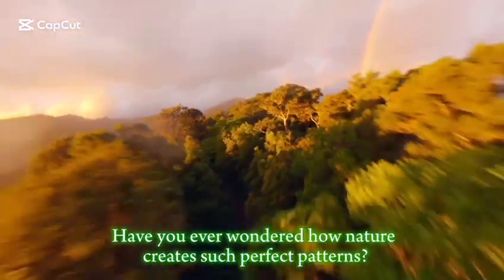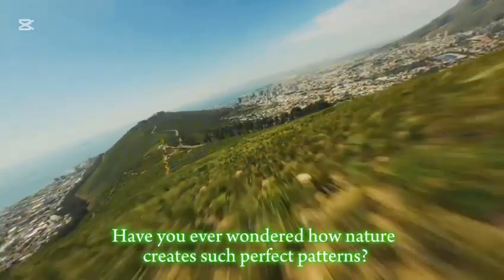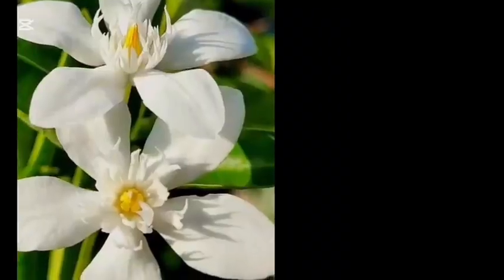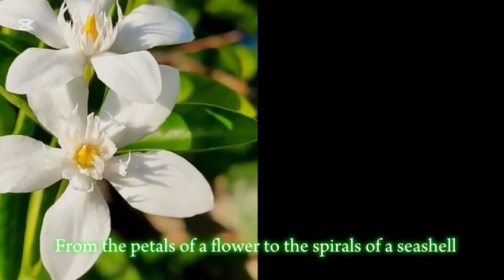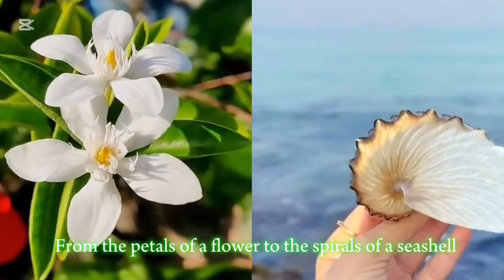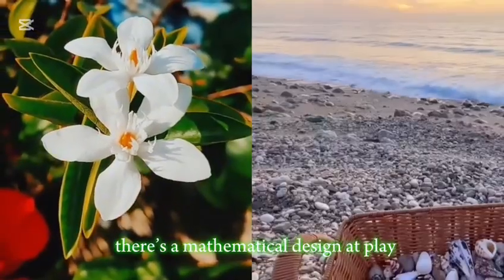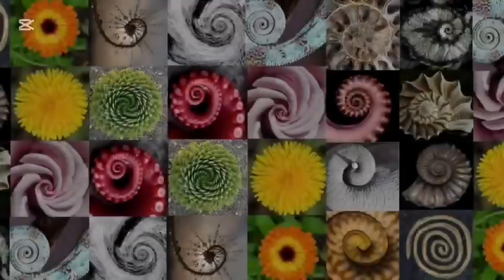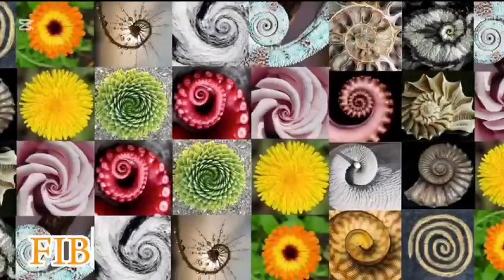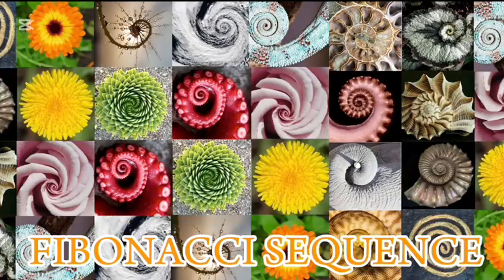Have you ever wondered how nature creates such perfect patterns? From the petals of a flower to the spirals of a seashell, there's a mathematical design at play. It's called the Fibonacci Sequence, and it's everywhere.